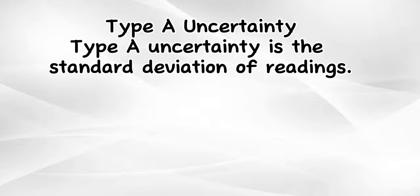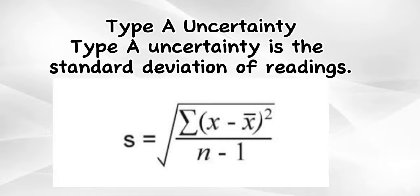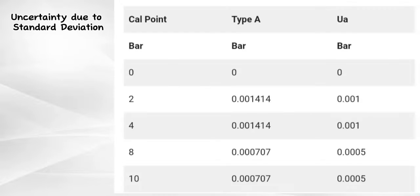Type A Uncertainty: Type A uncertainty is the standard deviation of readings.